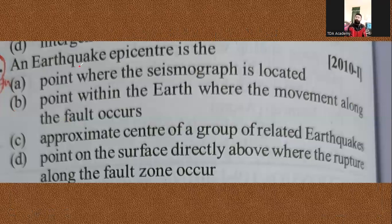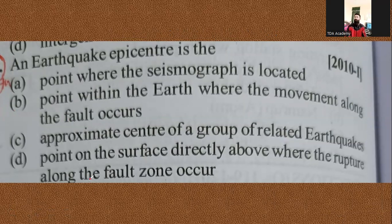The very first question: An earthquake epicenter is — (A) the point where the seismograph is located, (B) the point within the Earth where movement along the fault occurs, (C) the approximate center of a group of related earthquakes, or (D) the point on the surface directly above where the rupture along the fault zone occurred. Before going to the answer, we must discuss two aspects.